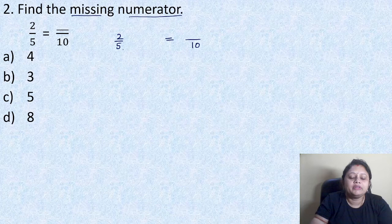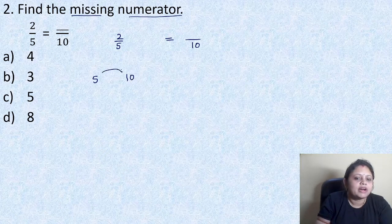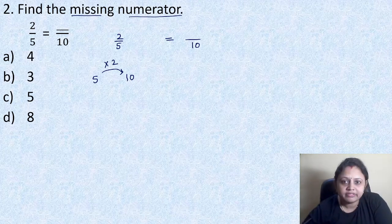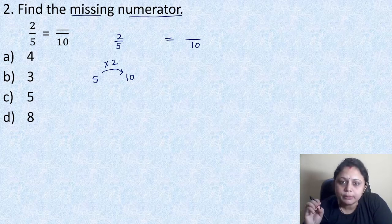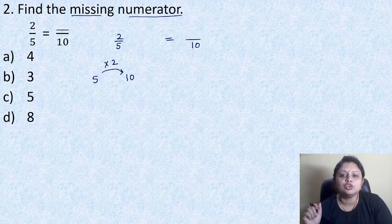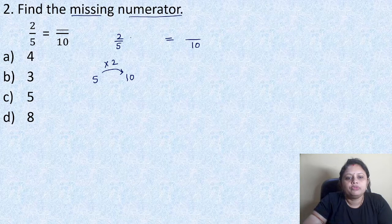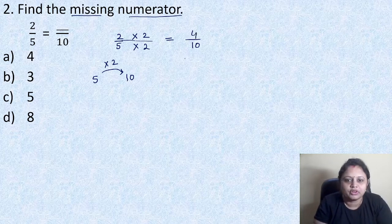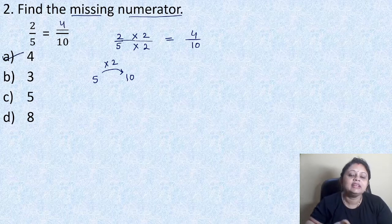Here 5 is there and here 10 is there. How can 5 be converted into 10? 5 can be converted into 10 by multiplying it with 2. In a fraction, we cannot multiply any number in either only the numerator or only the denominator. We have to multiply the number both in the numerator and the denominator. So we will do 2 into 2 divided by 5 into 2, that is 4 by 10. So the correct answer is option A, that is 4.